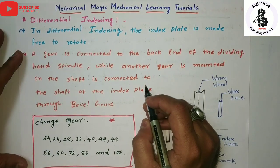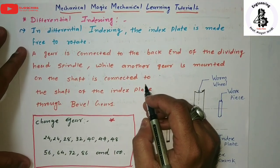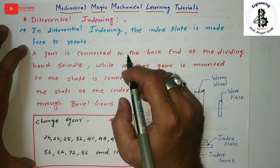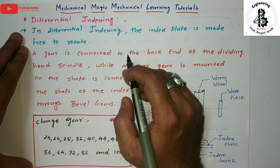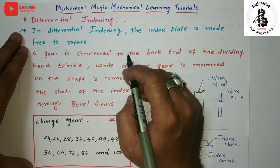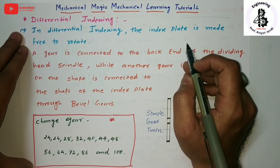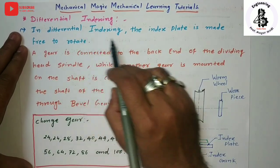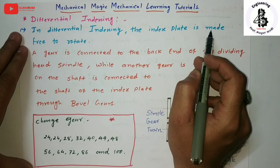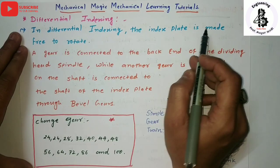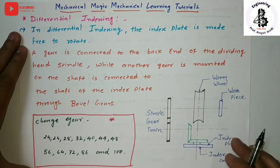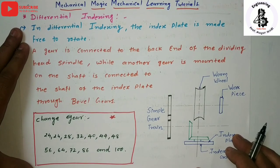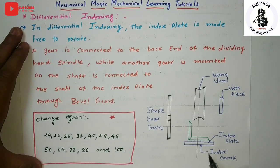Welcome to my YouTube channel Mechanical Magic - Mechanical Learning Tutorials. In this video I am talking about differential indexing, which is used to divide a periphery into equal number of parts. In differential indexing, the index plate is made free to rotate. Let us see the construction of a differential indexing mechanism.